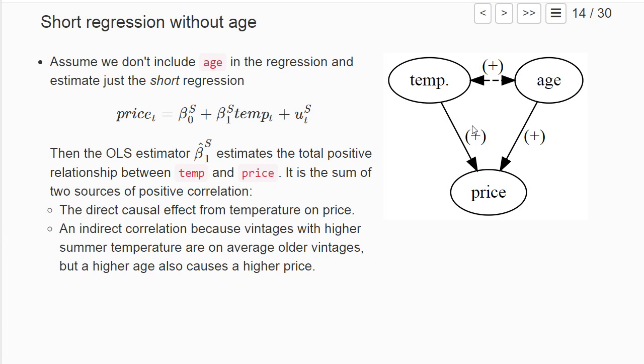Then the estimated coefficient β₁ˢ actually captures all the reasons for a positive correlation between temperature and price. But there's also an indirect effect: higher temperature corresponds to vintages of higher age, and higher age also causes higher price, so we also catch a little bit of this positive effect in our estimate for β₁ˢ.